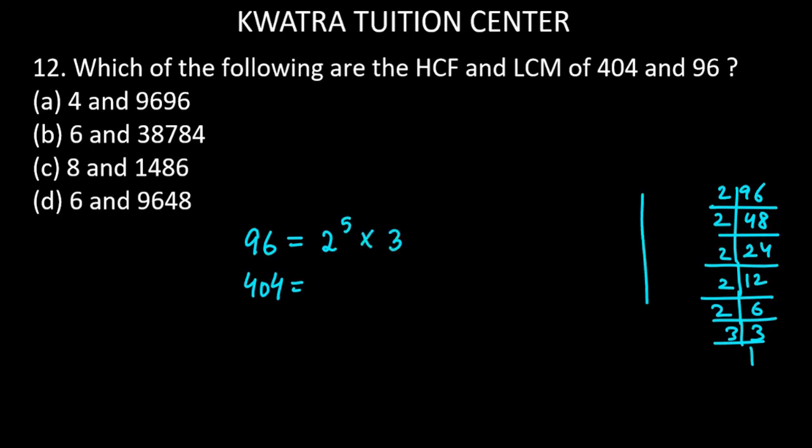How do we divide 404? It is divided by 2. It is 202 divided by 2, you will get 101. And 101 prime number is which is 101 only. So 2 square into 101.